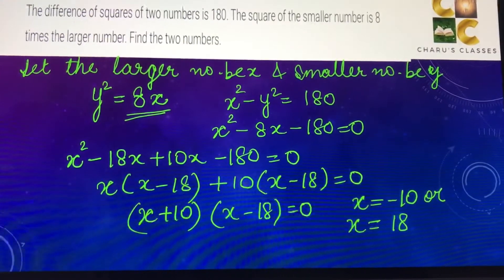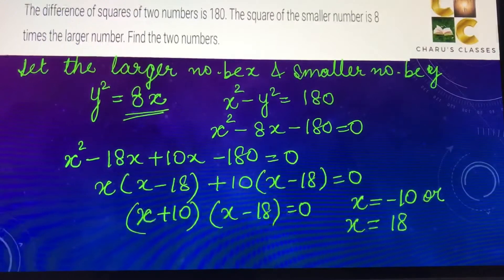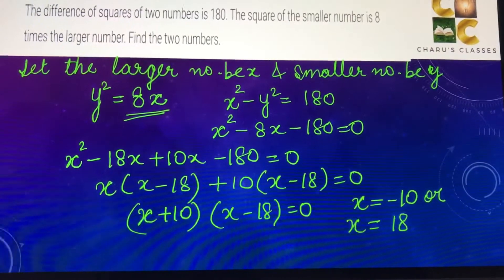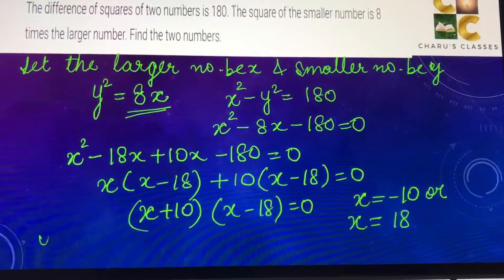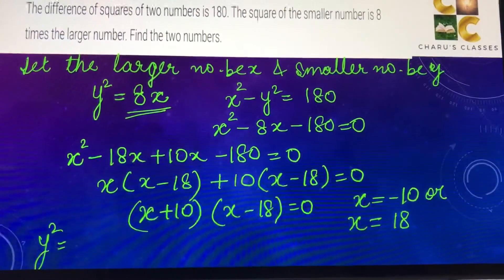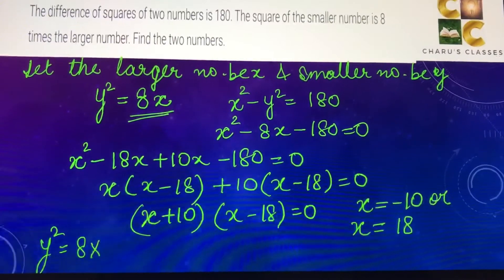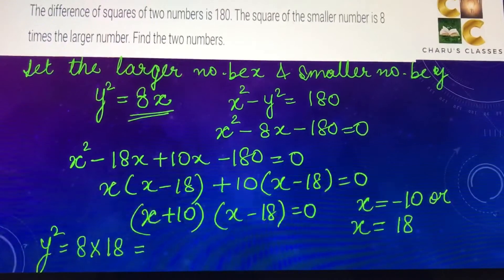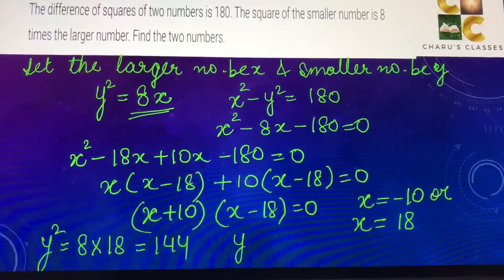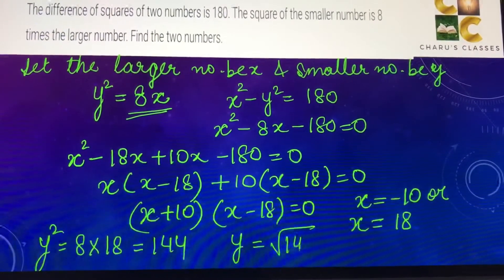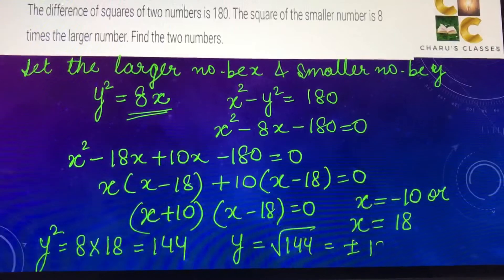In this case, we can discard the negative number. If we take x = 18, then y² = 8 × x, which is 8 × 18. That will come as 144, or y = √144, which is ±12.